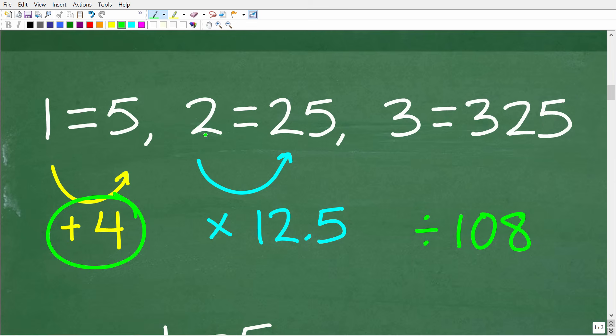Now, if we took 2 and we multiplied it by 12.5, we could get to 25, but this is not going to work over here. And of course, over here, we have 3 is equal to 325. Well, if we take 325 and divide it by 108, we'll get pretty close to 3. So there's no consistent pattern of these numbers, right? So maybe we're looking at the problem wrong.